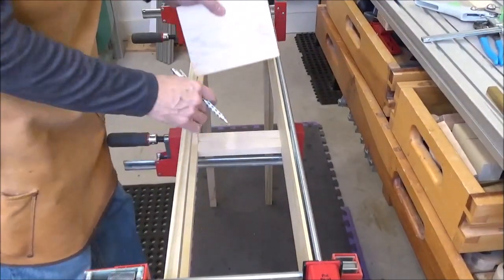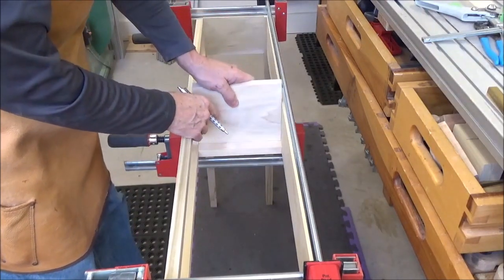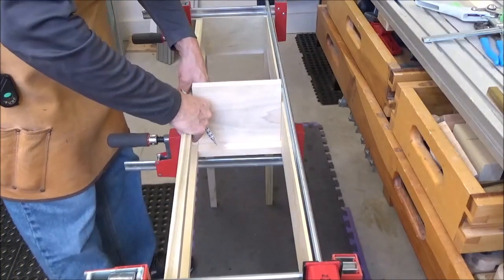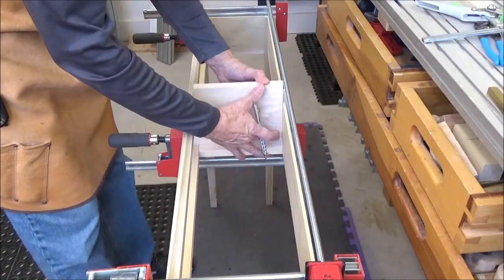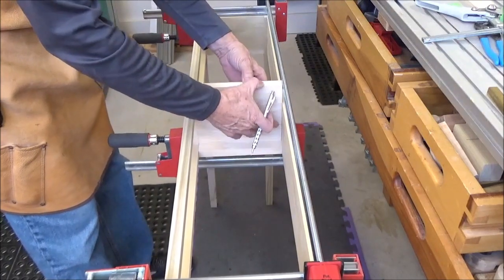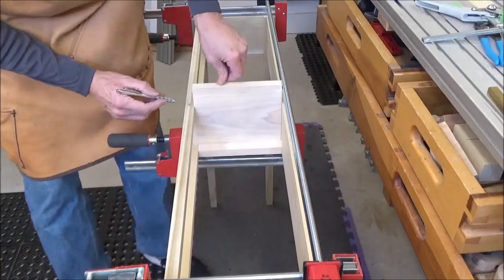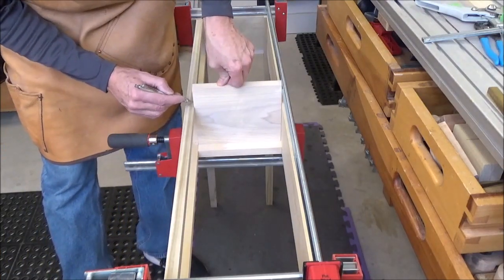Alright, now the divider. Now this worked out pretty nice, drop in like this, square it up, and then just basically glue it in place. I need to cut it to length, or height I should say.